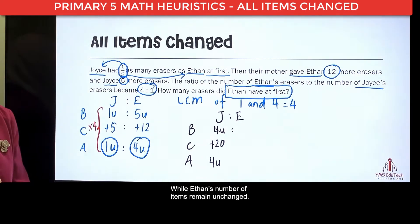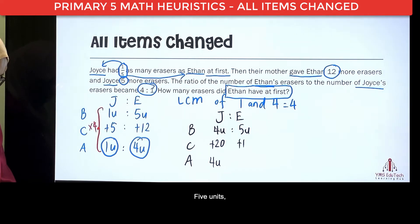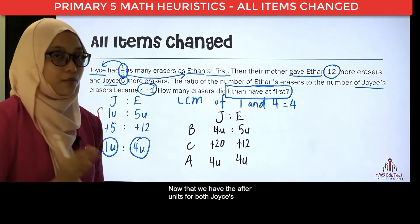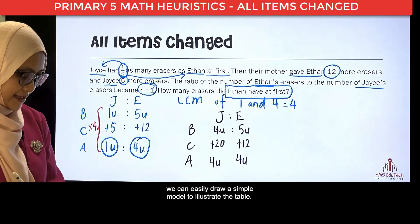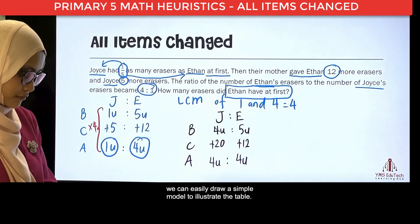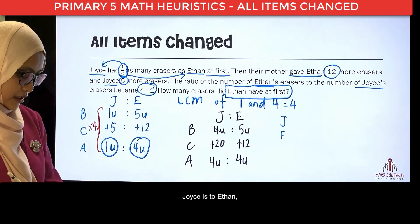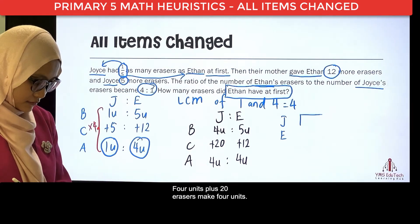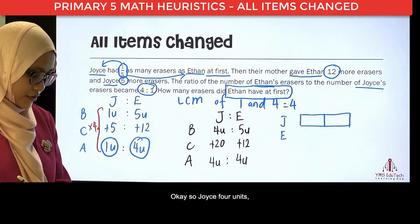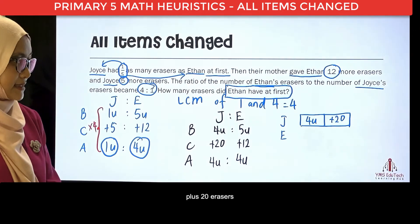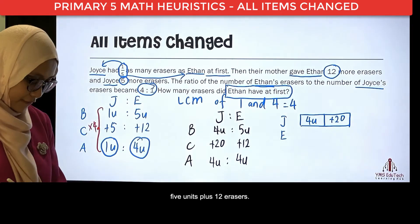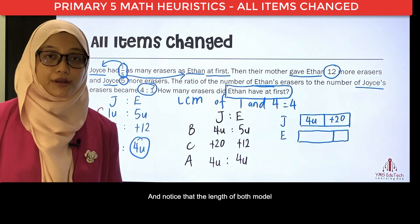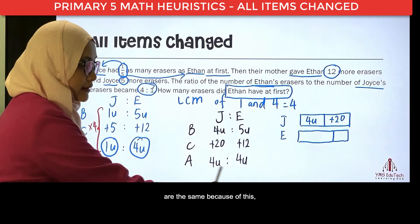While Ethan's number of items remained unchanged: 5 units plus 12, giving 4 units. Now that we have the after units for both Joyce and Ethan being the same, we can easily draw a simple model to illustrate the table. So, Joyce is to Ethan. Joyce: 4 units plus 20 erasers. While Ethan's: 5 units plus 12 erasers. Notice that 5 units is slightly longer than 4 units, and the length of both models are the same because of this — 4 units each.